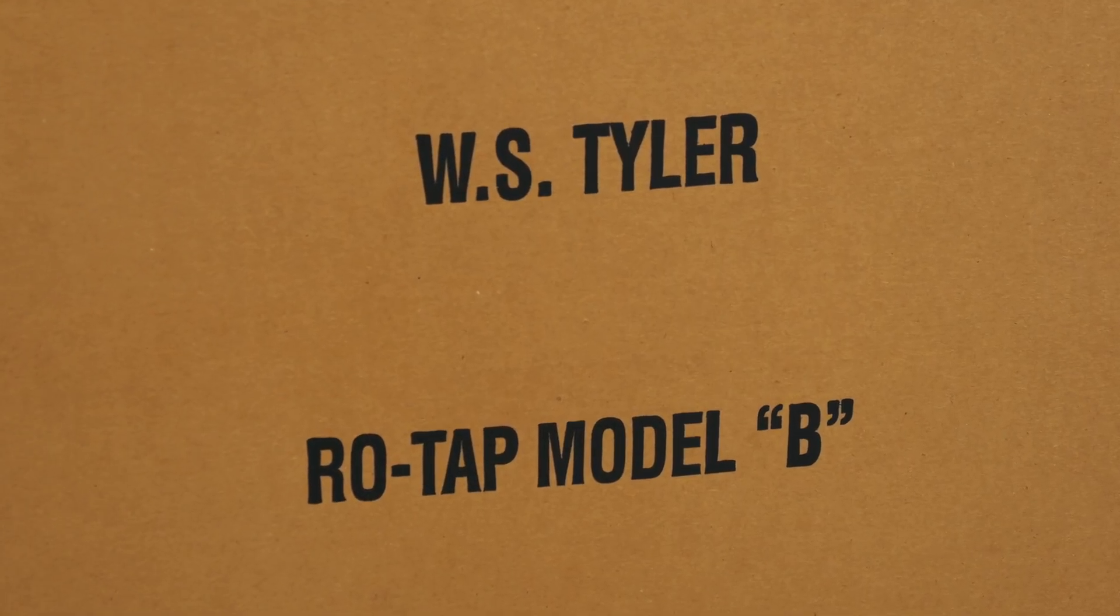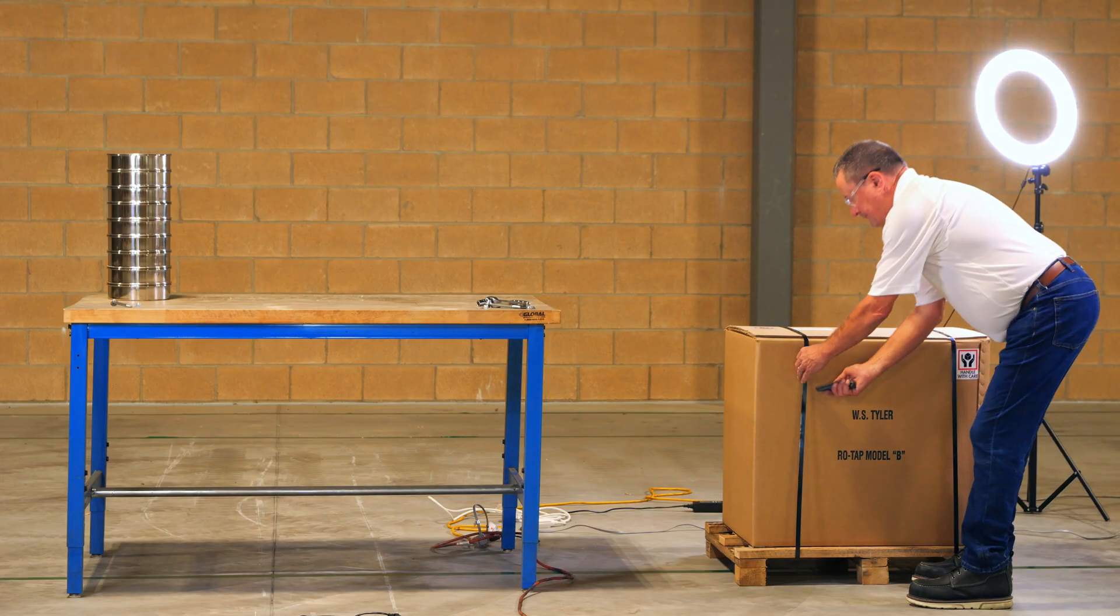So what do you do when you receive your ROTAP RX29 sieve shaker? Well, first you cut the straps.